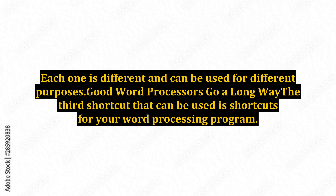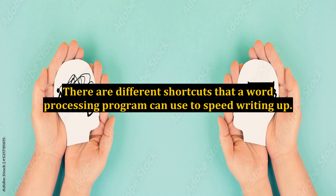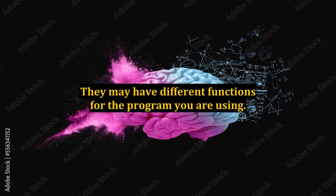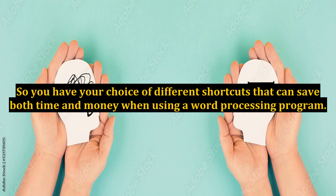Good word processors go a long way. The third shortcut that can be used is shortcuts for your word processing program. There are different shortcuts that a word processing program can use to speed writing up. Depending on your particular word processing program, there are both keyboarding and mouse shortcuts that can be used for quicker reading and writing of the newsletter. These may have different functions depending on the program you are using, but they can save both time and money.